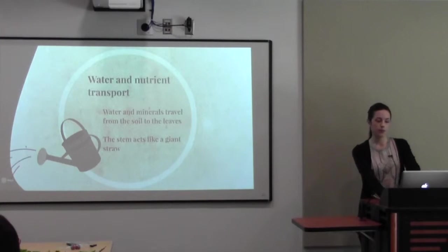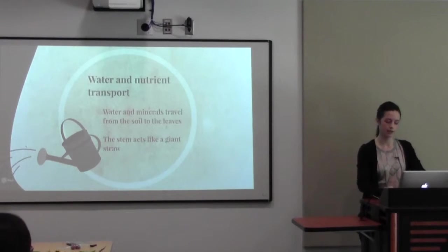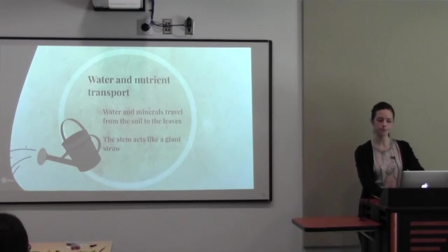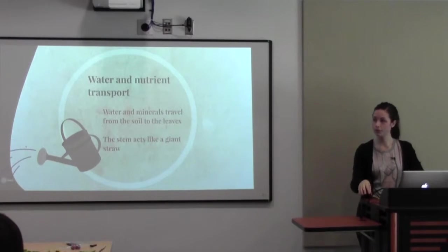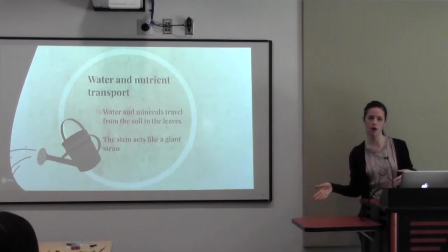Now we're going to talk about the stem. But first we're going to talk about water and nutrient transport. The water is going to be really important to help the plant make food during photosynthesis. The water and the minerals that the roots take up have to get up to the leaves, so they travel through the stem to do that. The stem kind of acts like a really big straw for the plant.